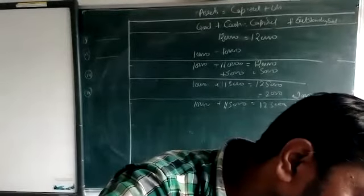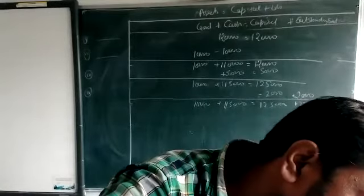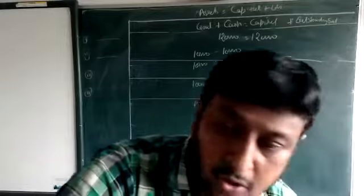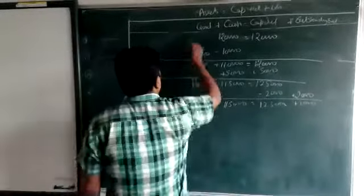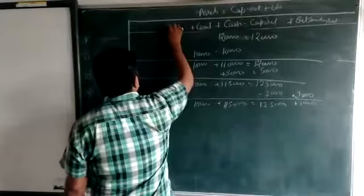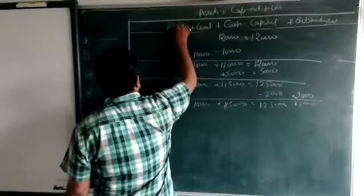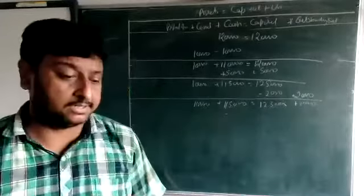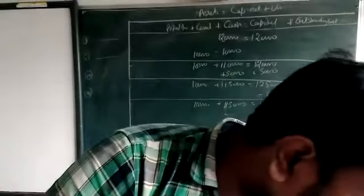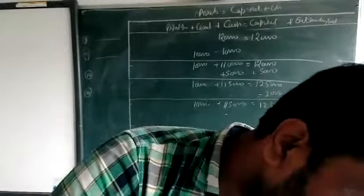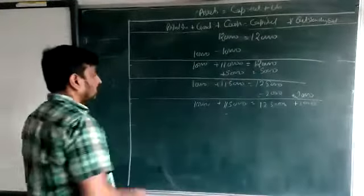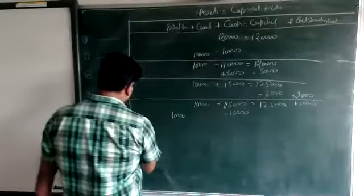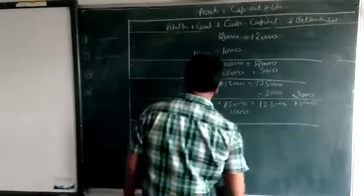Prepaid insurance is an asset, so we go on the asset side. We make a new head 'prepaid insurance' for one thousand and reduce from capital by one thousand.